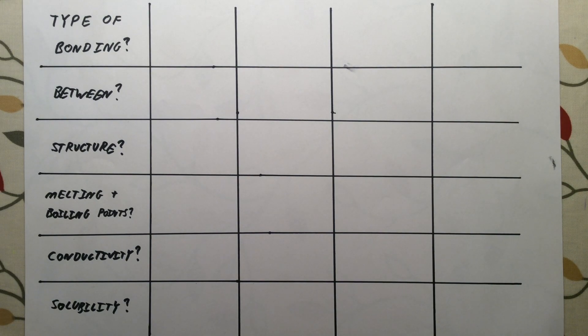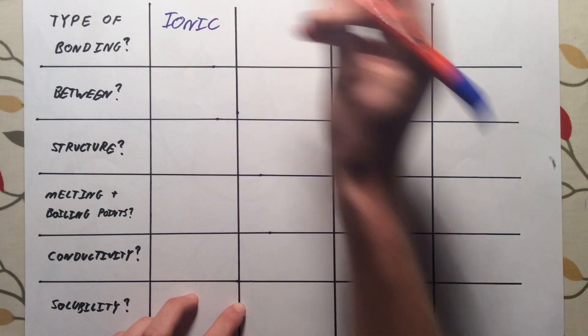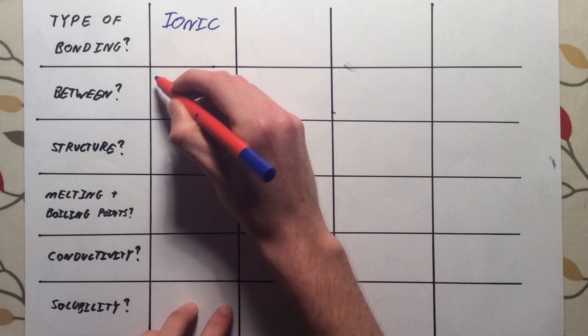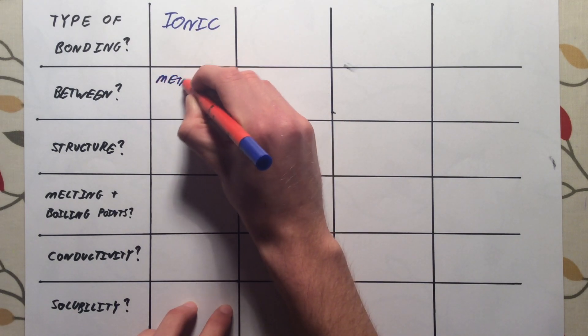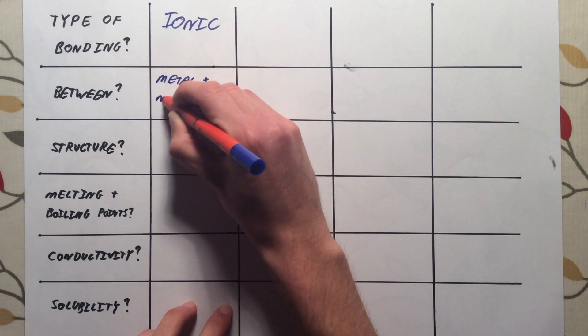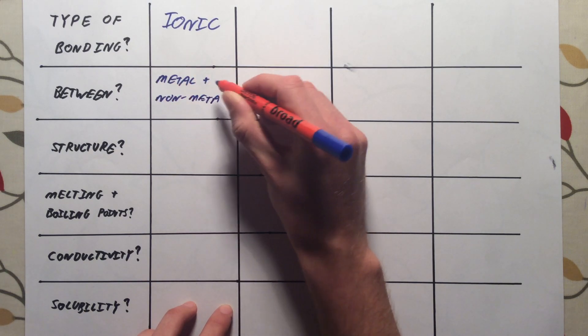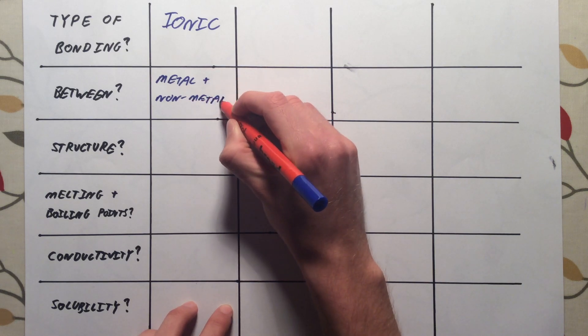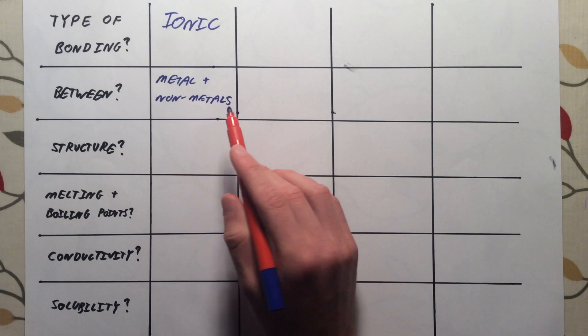The first type of bonding we have met was ionic bonding, which was between metal and non-metal atoms. So we had metals transferring one or more electrons to non-metals, forming a positive metal ion and negative non-metal anion.